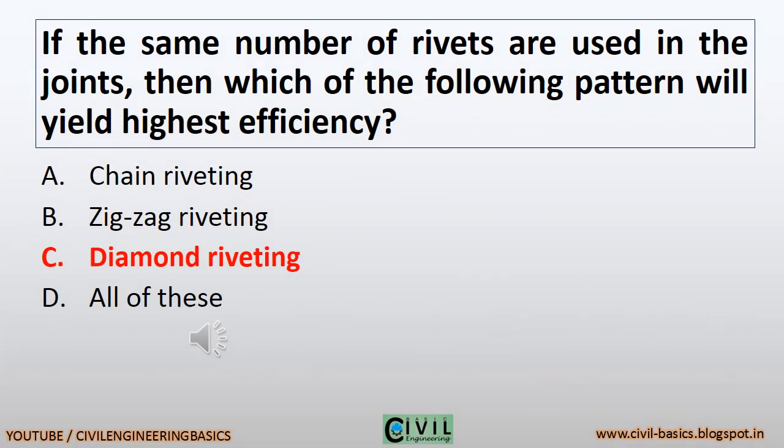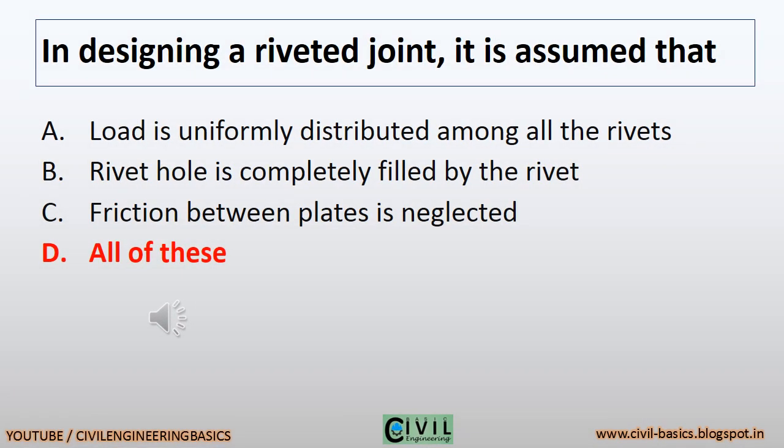If the same number of rivets are used in the joints, then which of the following pattern will yield highest efficiency? Diamond riveting. Assumptions: the rivet hole is completely filled by the rivet, and friction between plates is neglected — all of these.